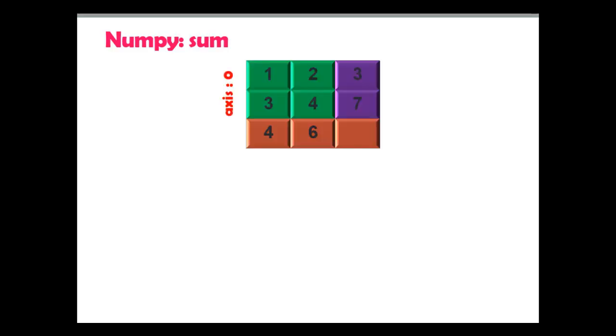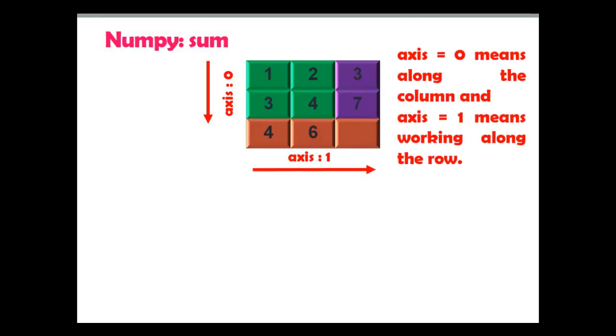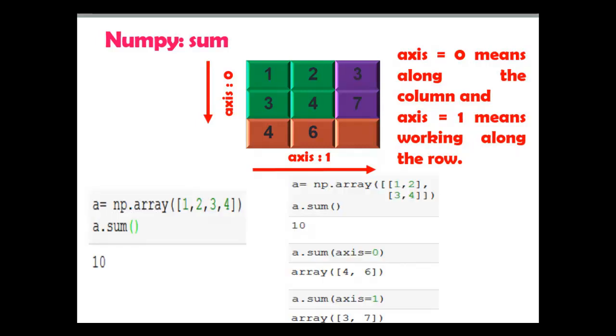Remember, axis is the direction along which we want to calculate the sum value; otherwise it will consider the array as flattened. Here you can see axis zero and axis one. Axis zero means along the column and axis one means along the row. Here I have mentioned different examples.